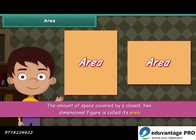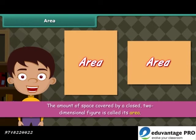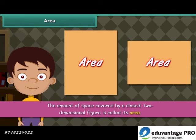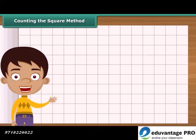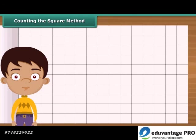Area of one such figure can be different from the area of another such figure. Now let us calculate area with the help of a simple method. It is known as the counting the squares method.